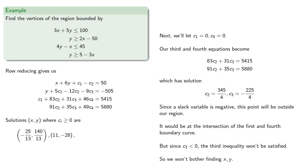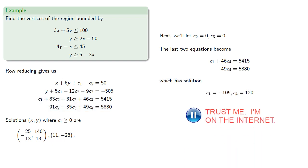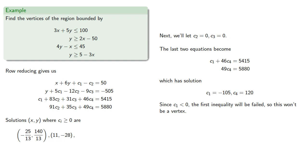Next, we'll let c2 and c3 be 0. The last two equations become... Which has solutions... And again, since c1 is negative, the first inequality will be failed, so this won't be a vertex.